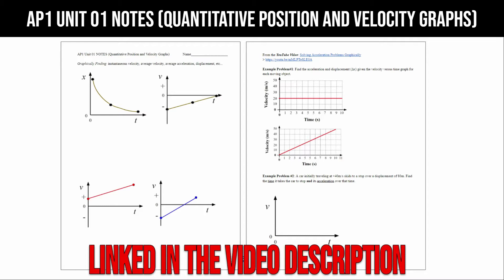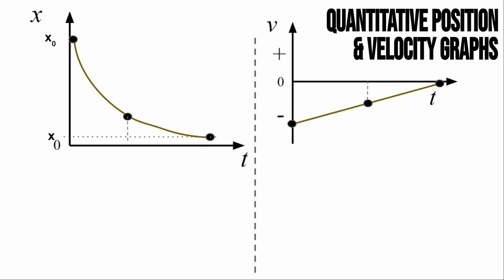If you don't have a copy of the notes, it's linked in the video description. We're going to take this one graph at a time to figure out how we determine instantaneous velocity, average velocity, average acceleration, and displacement from each of these graphs individually.